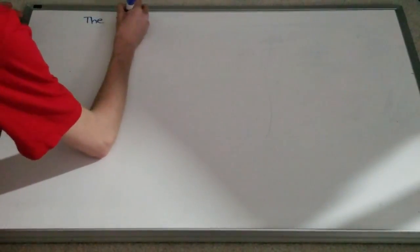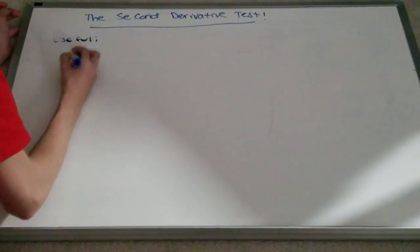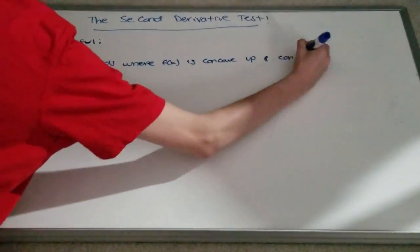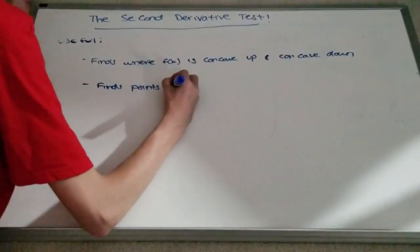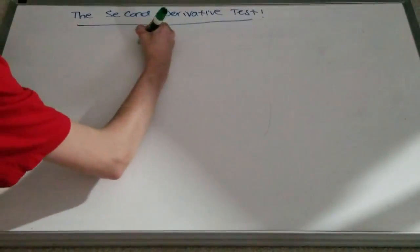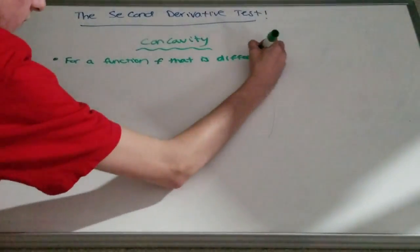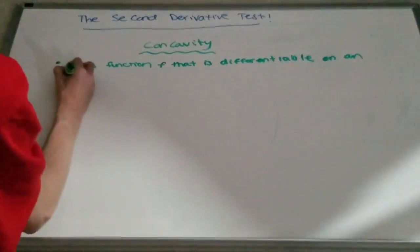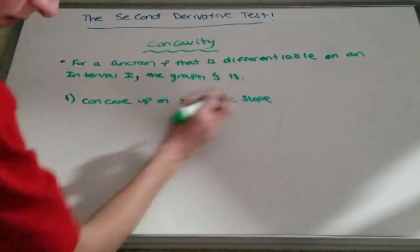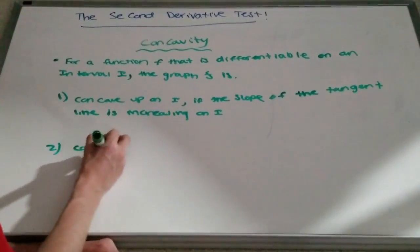Now that we are done with the first derivative test, we can move on to the second derivative test. This test follows a similar procedure, but the second derivative test allows us to find the concavity of the function along with the inflection points. The official definition of concavity is: let f be differentiable on an open interval I. The graph of f is concave upward on I if f' is increasing on the interval, and concave downward on I if f' is decreasing on the interval.